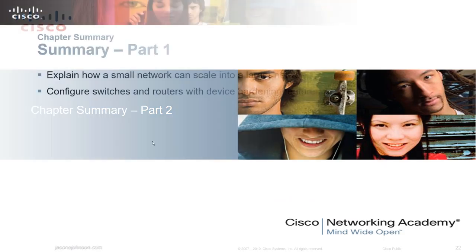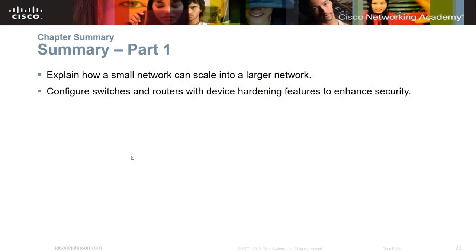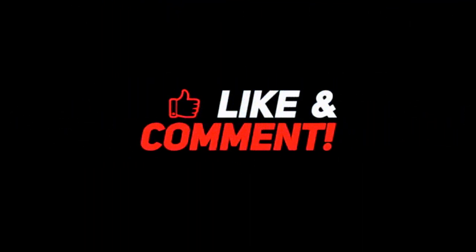This has been Chapter 11 Part 1. We looked at how small networks can scale into larger networks, and how configuring switches, routers, and device hardening features enhances security. We covered security in a general overview. There's a lot of material in Chapter 11, so there is a Part 2 — links will appear at the end of the video or in the description below. I hope this video was helpful. Have a great day.